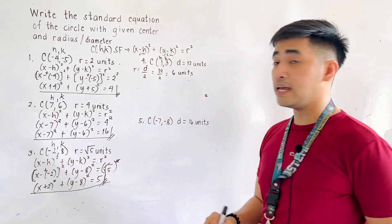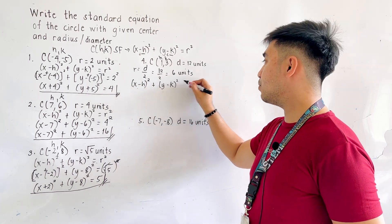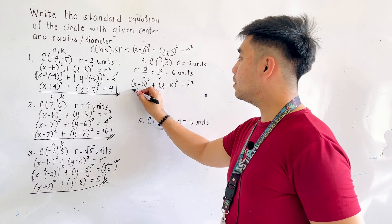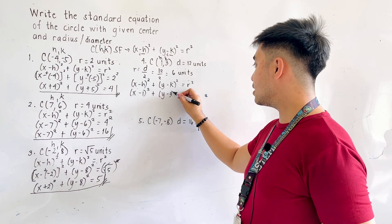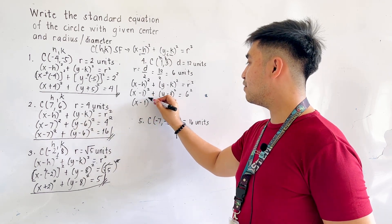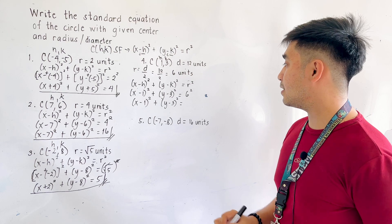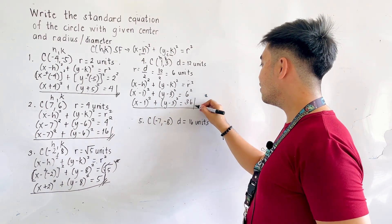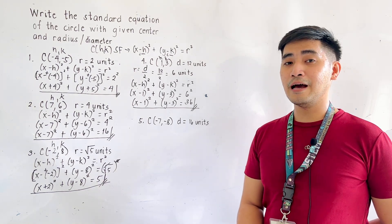Therefore h is 1 and k is 3. Writing the equation: x minus h, quantity squared, plus y minus k, quantity squared, is equal to r squared. Substituting, we get x minus 1, quantity squared, plus y minus 3, quantity squared, is equal to 6 squared. Simplifying: x minus 1, quantity squared, plus y minus 3, quantity squared, is equal to 36. That is the standard equation with center at (1, 3) and diameter 12 units.